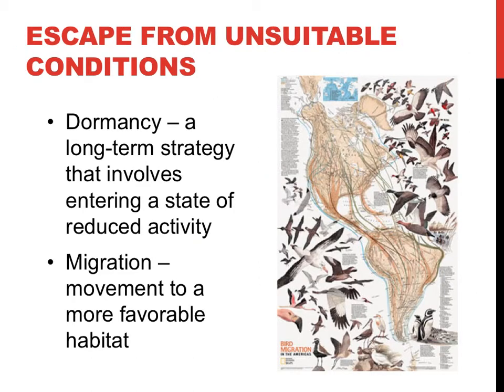Other strategies that organisms employ to survive an ever-changing environment include escaping them via migration or dormancy. Dormancy involves entering a state of reduced activity long-term. Bears are not true hibernators, but they enter a state of reduced activity during the winter. Trees drop their leaves in the autumn and slow down their metabolic processes. Bacteria can also perform a form of dormancy when they form endospores.